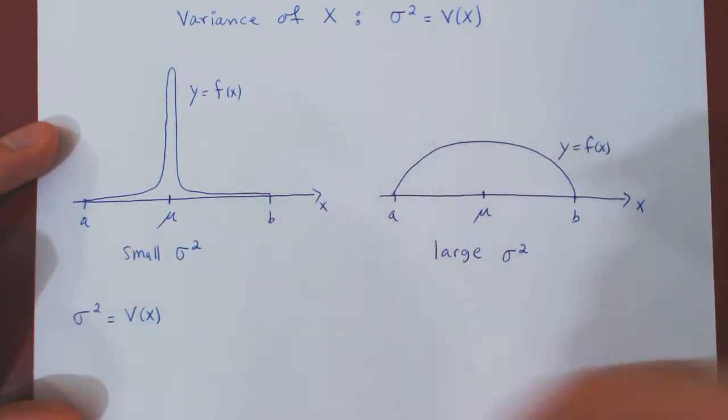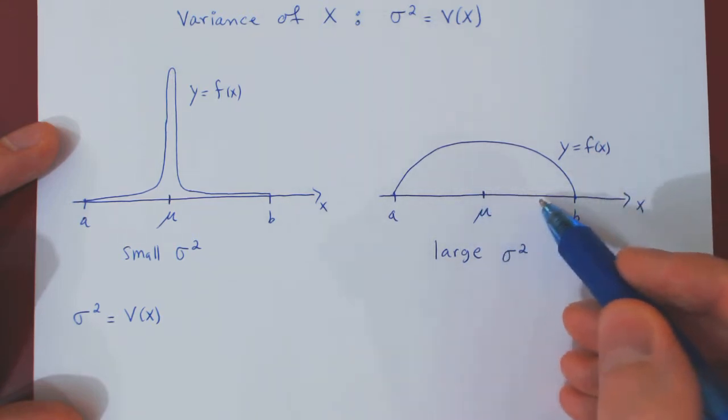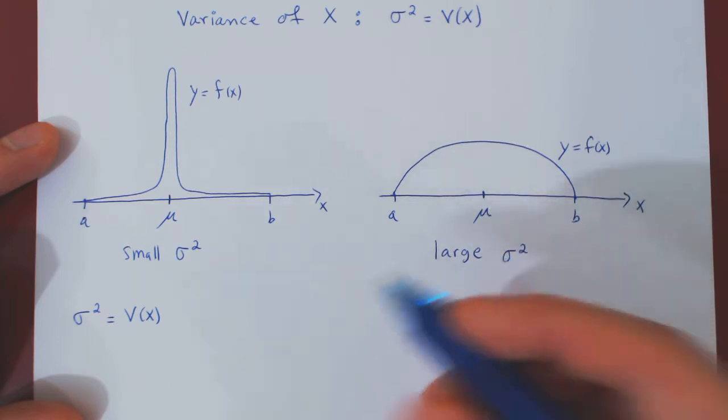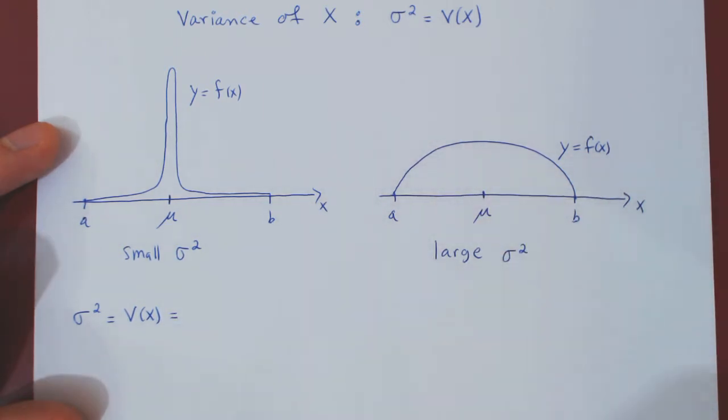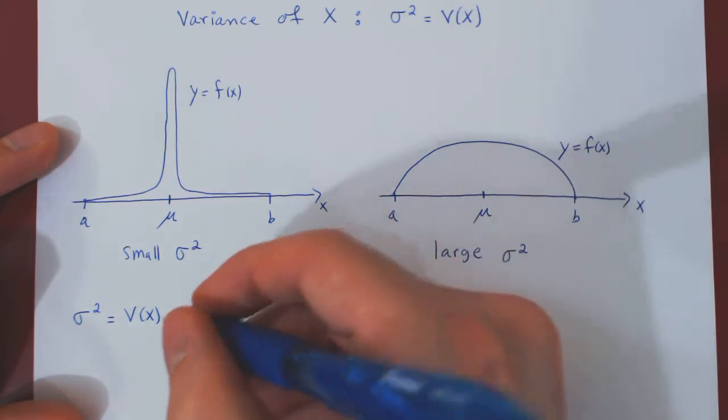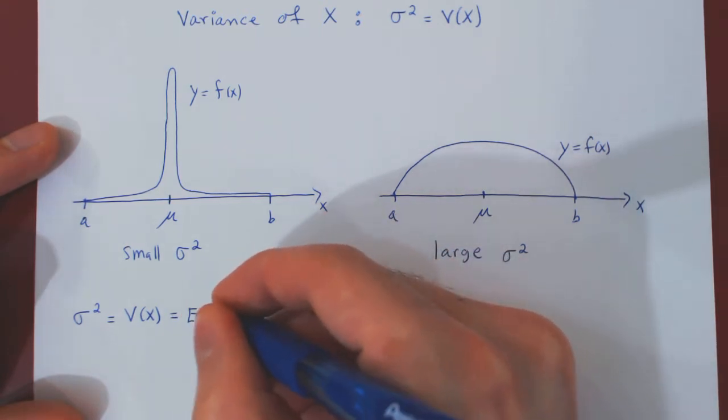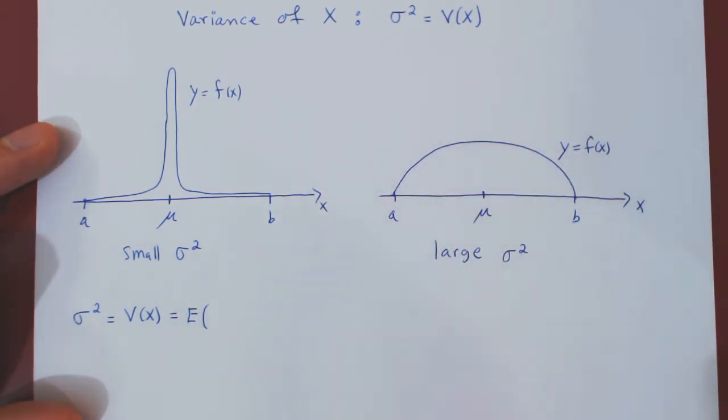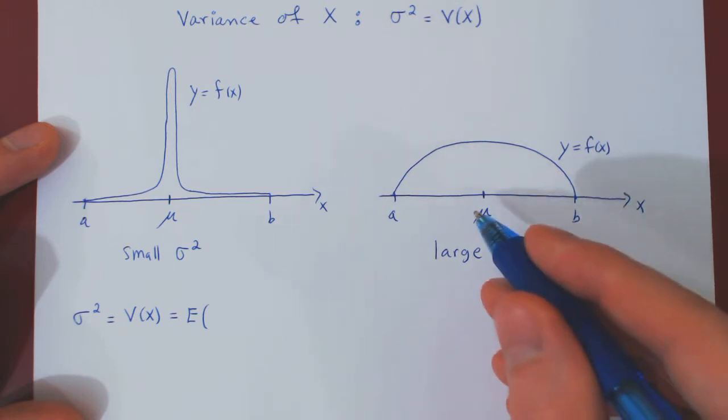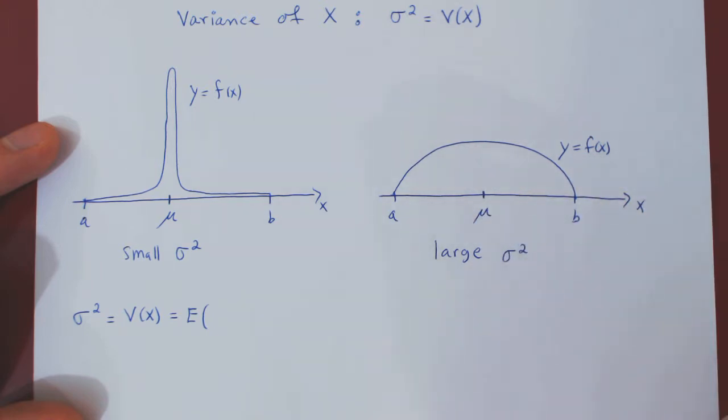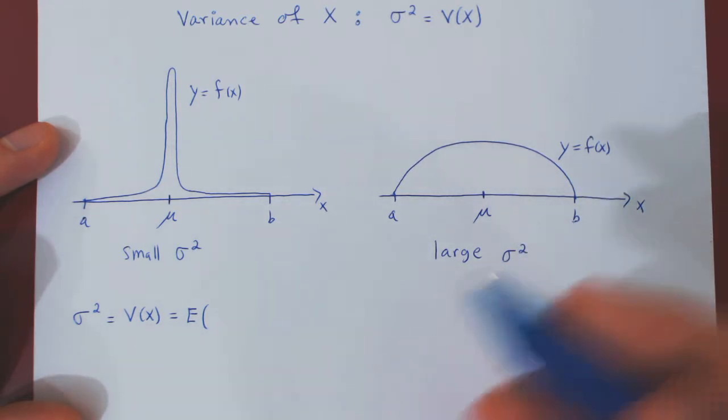Well, if you think about this, we have to ask, essentially, on average, how far will X be from the average value, therefore the mean? Well, an average is an expectation. So, we look at the expectation of the difference between X and μ, so X minus μ, but because we want a positive measure, we will look at the expectation of the difference between X and μ squared.